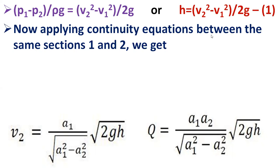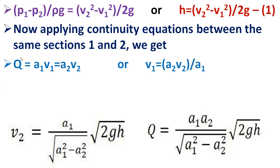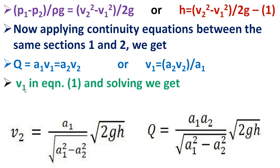Applying the continuity equation between sections 1 and 2, we have A1 V1 equals A2 V2, where Q equals cross-sectional area multiplied by velocity. Expressing V1 as A2 V2 divided by A1, and substituting into equation 1, we get V2 equals A1 divided by the square root of A1 squared minus A2 squared, times the square root of 2GH. Therefore Q equals A2 V2, giving Q equals A1 A2 divided by the square root of A1 squared minus A2 squared, times the square root of 2GH. Q represents the theoretical discharge of the venturimeter under ideal conditions.